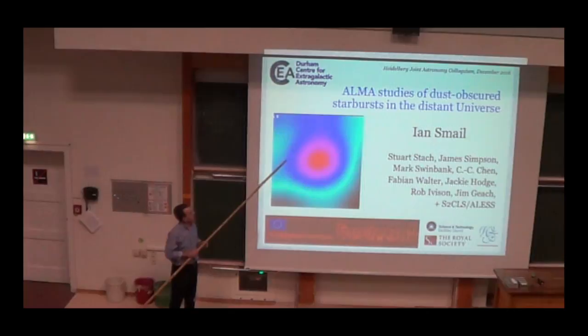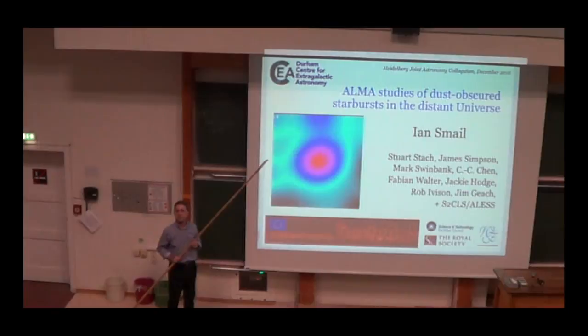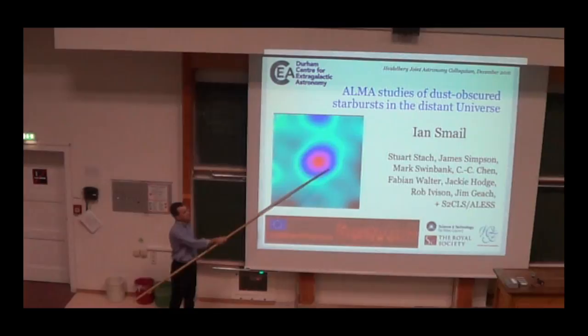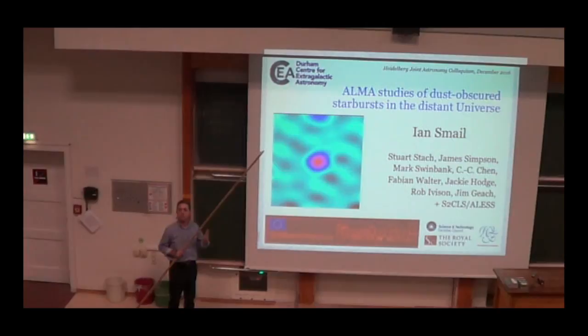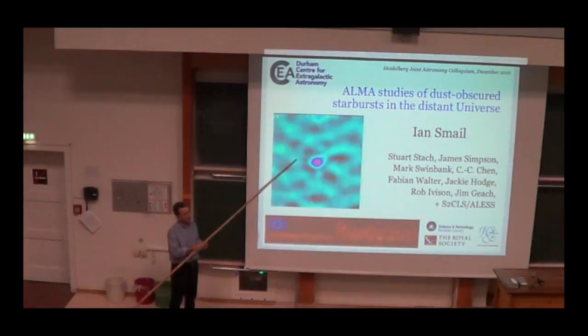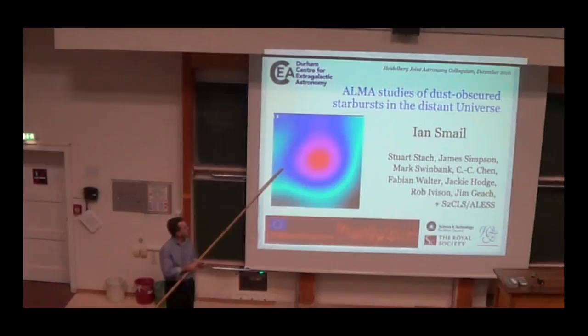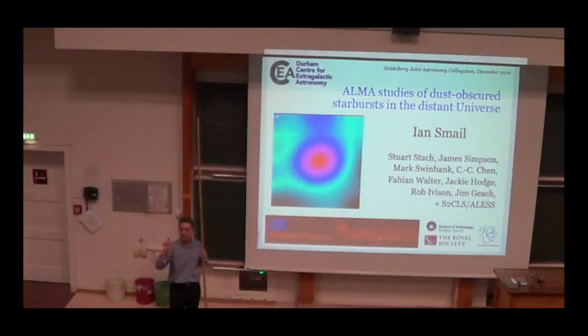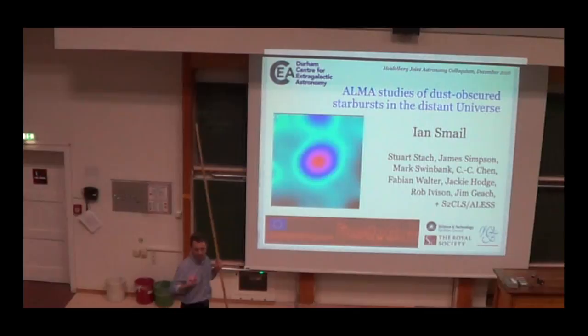This movie that's been looping illustrates one of the problems that we had before ALMA, which is this is an image of a submillimeter source taken with a single-dish telescope, very low resolution, a few arc minutes across. And as you will see, this was a real challenge to try to identify the source of emission responsible for that large blob. And this morphs into an ALMA map, taken at 870 microns in submillimeter, that allows you, because of the very much defined beam of ALMA, the interferometer, to pinpoint precisely the location of that submillimeter galaxy.